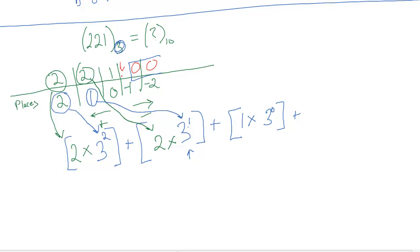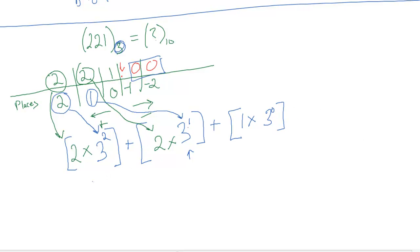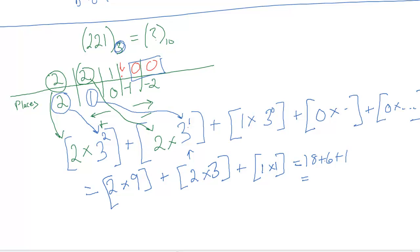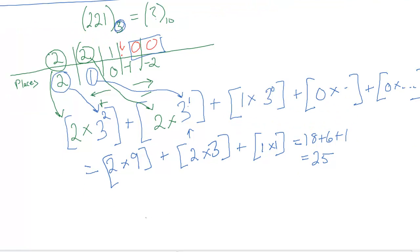And then these two numbers are just 0, so we can essentially ignore them, because they're going to end up being 0. The term will end up being 0, because we'll end up with plus 0 times something, plus 0 times something, which is going to be 0. So when we add this, we end up with 2 times 9, plus 2 times 3, plus 1 times 1. If we add that all together, we get 18 plus 6 plus 1, which is equal to 25. So to answer our original question, 221 base 3 is equal to 25.